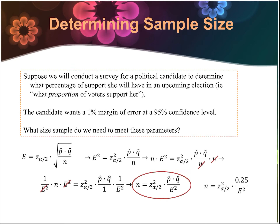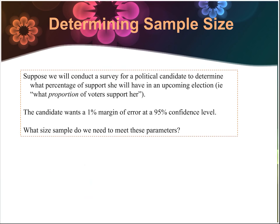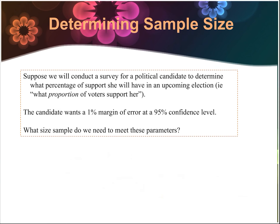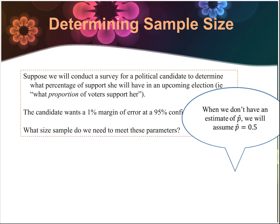One important note: in this example, they didn't tell us what the sample proportion is. If you don't know the sample proportion, use p-hat = 0.50, which means q-hat is also 0.50. Just use 50% if they don't tell you.